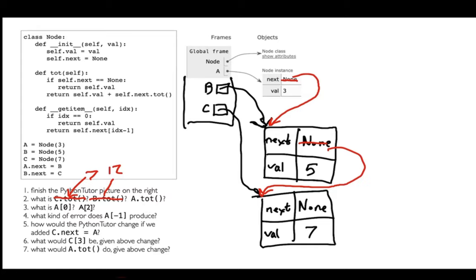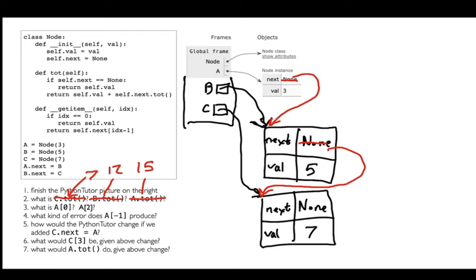What about a.total? Self is a, and self.next is not none — it refers to something — so I return self.value plus self.next.total. Self.value is three, and self.next.total is the same as b.total, which is 12. So three plus 12 gives 15. So a.total is 15, giving the total sum of everything in my list.